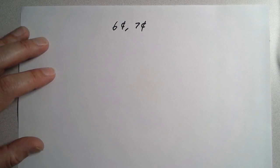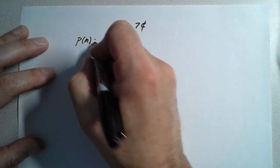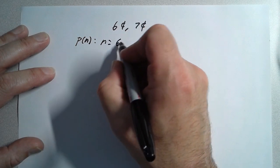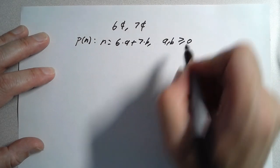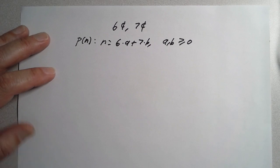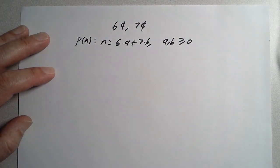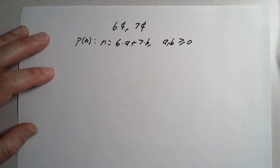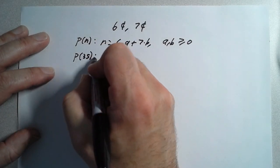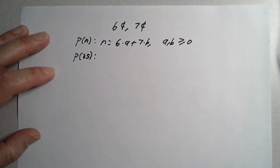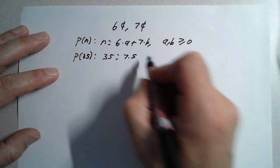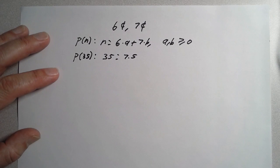The idea is that P(n) is the proposition that n equals six times a plus seven times b, where a and b are integers greater than or equal to zero. That's the same as saying there's some combination of six-cent stamps (a of them) and seven-cent stamps (b of them) that adds up to postage value n. We know P(35) is true because 35 equals seven times five plus six times zero.